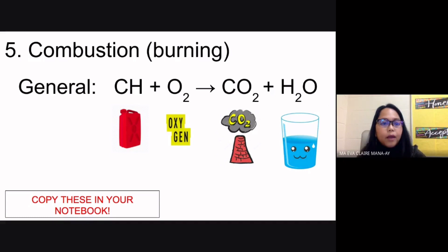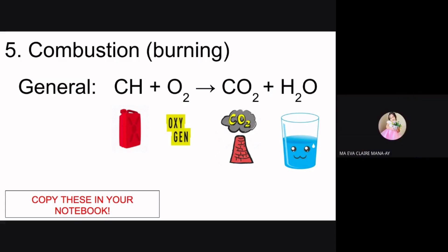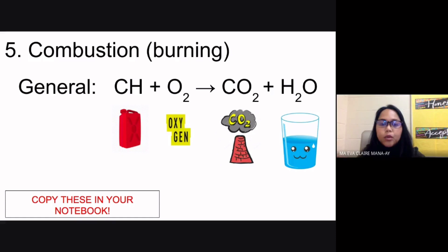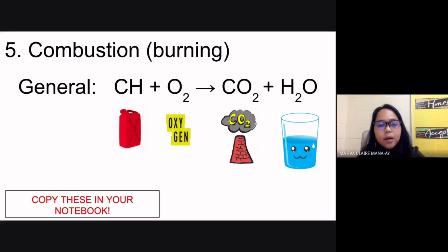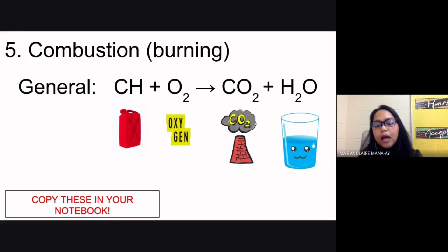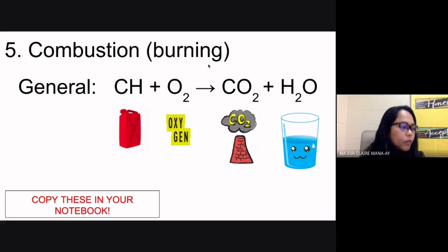To recap, the five types of chemical reactions are: synthesis (A + B → AB), decomposition (AB → A + B), single replacement (one substance displaces another), double replacement (two compounds switch partners), and combustion (hydrocarbon + oxygen → carbon dioxide + water). Neutralization is a special type of double replacement between an acid and a base, always producing salt and water.